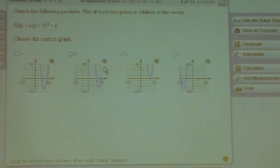And remember to keep k the same. So the vertex is located at positive 7, comma negative 8.